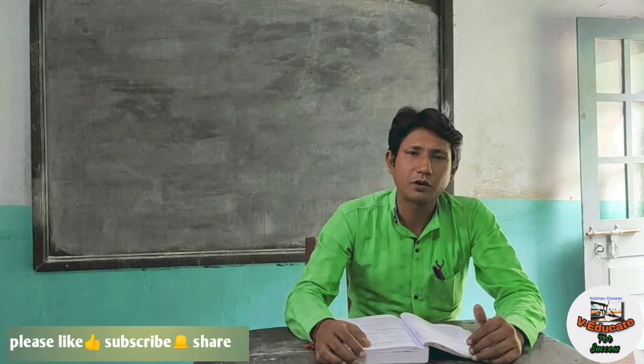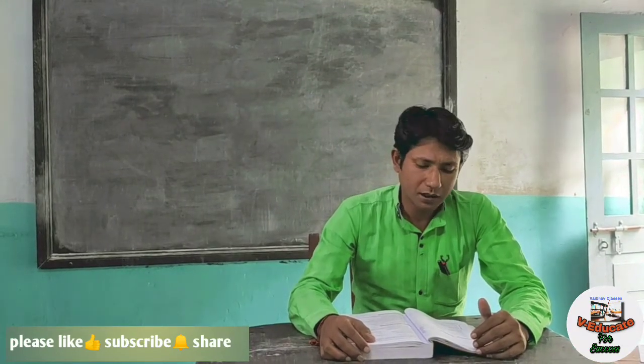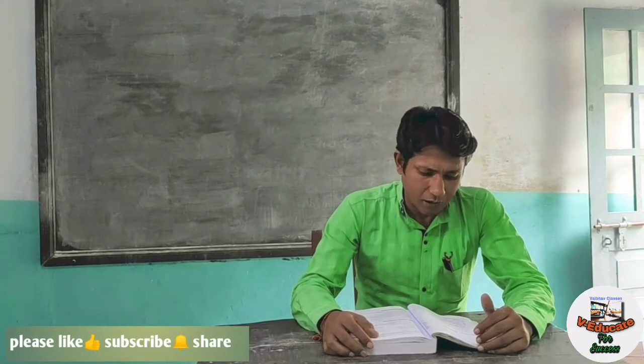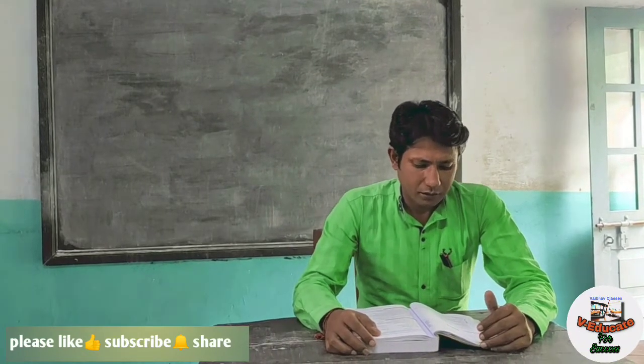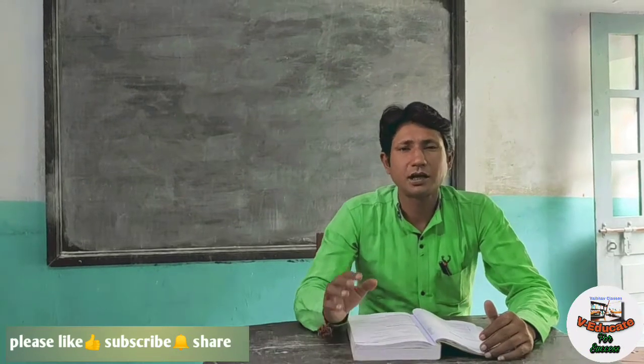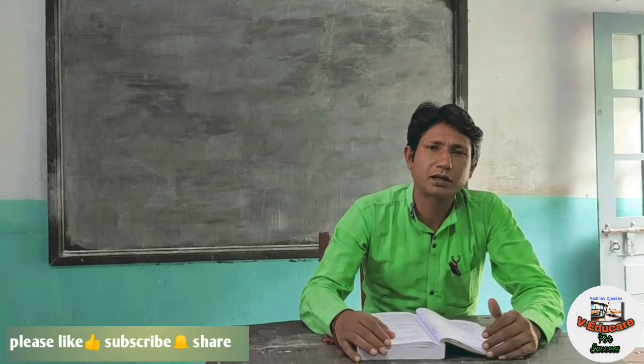Receipt and Payment Account is a Summary of — किसकी Summary है? The right answer is Cashbook. यही आपको याद रखना है: Receipt and Payment Account, Cashbook की Summary होती है।